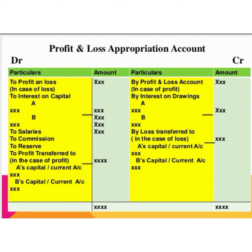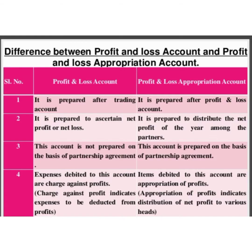That closing balance is the distributable profit amount. Now we are going to differentiate profit and loss account and profit and loss appropriation account.